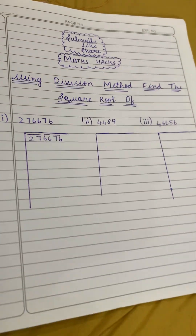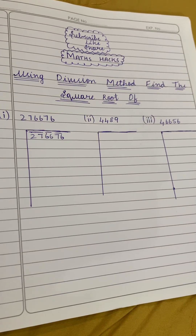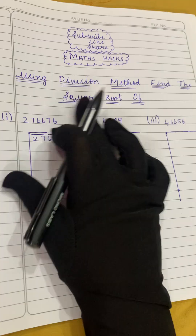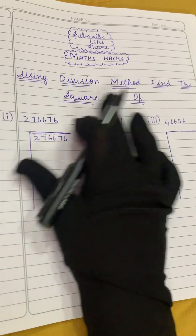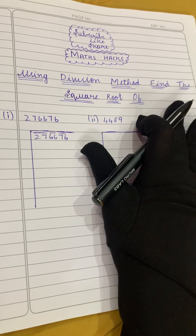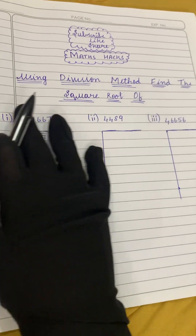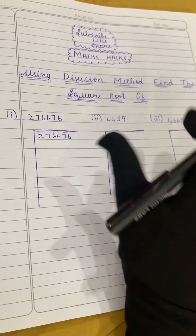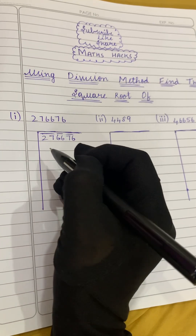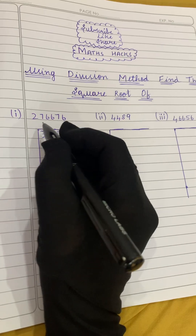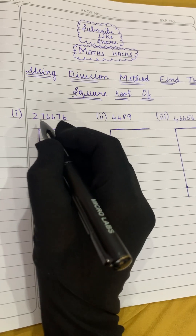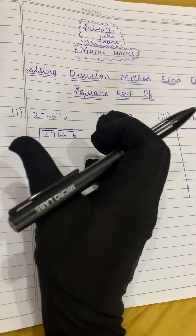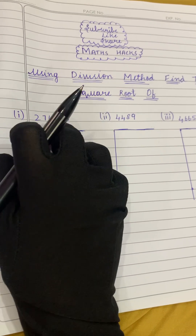Hi viewers, I hope you all are doing fine. Today we will find square root using the division method. Let's solve the given questions one by one. The first question is 276676 — we have to find the square root of this number.